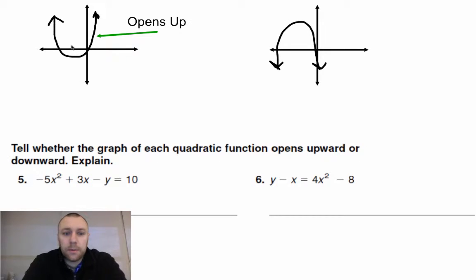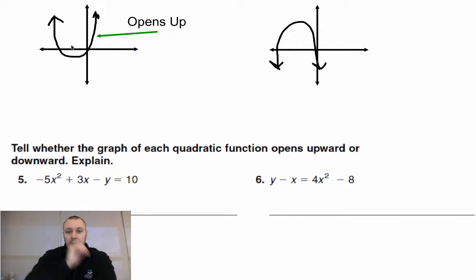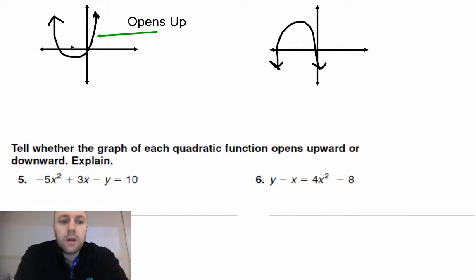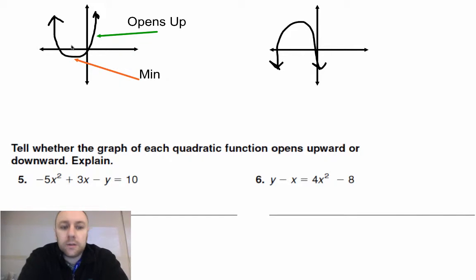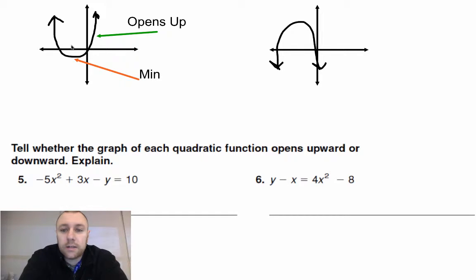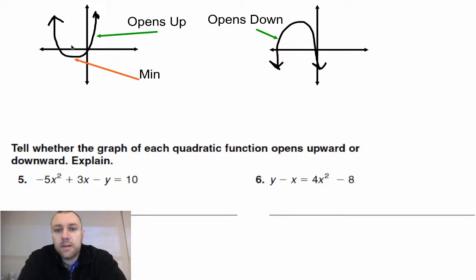The first step is to know what a minimum and maximum looks like. So if a graph opens up like the first example, it's going to have a minimum value where the vertex is. If it opens down like this, it is going to have a maximum value.